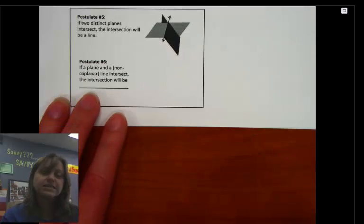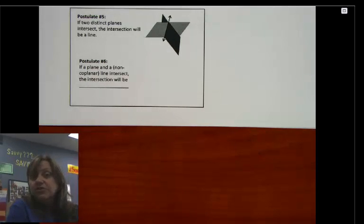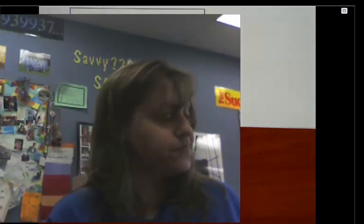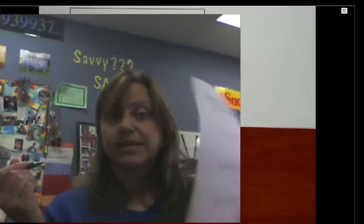And postulate number six. This is one I want to read with you and ask you to pause the video and see if you can draw a picture after we complete what that says. Imagine you have a plane and a non-coplanar line. Okay, so that means you've got a plane and a line that's not contained in the plane. It's separate from it. What's that intersection going to look like? To help you, you might want to grab a piece of scratch paper, and you can use your pen as a line.